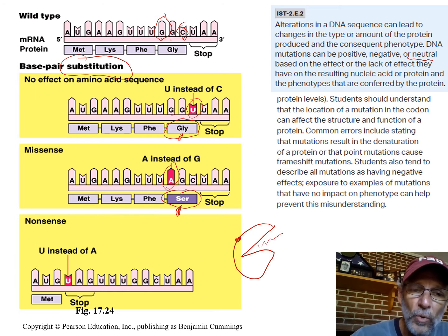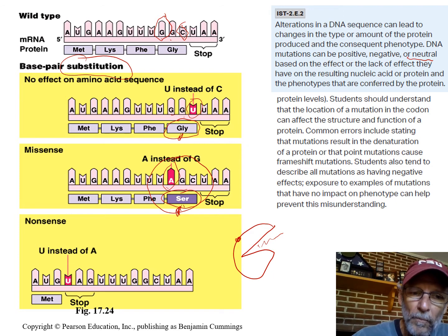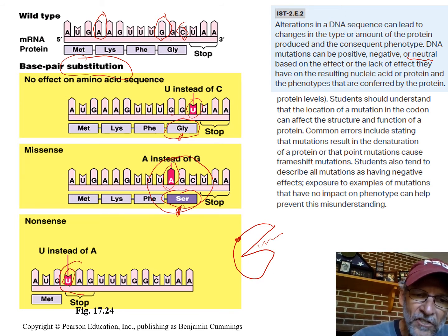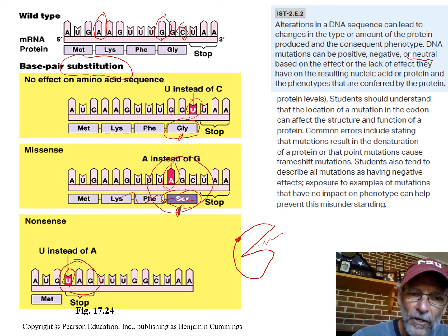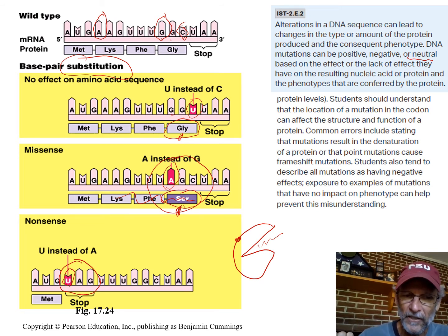Here's one that would make a big difference. A base substitution in most places might change one amino acid at most, but if this substitution replaced an A with a uracil, you reach an early stop codon. All the amino acids from that point to the end are not going to be on that protein — you would predict a much bigger change since you've caused the deletion of a large number of different amino acids.